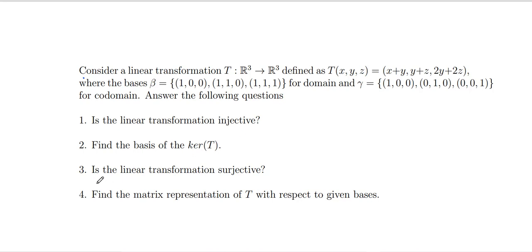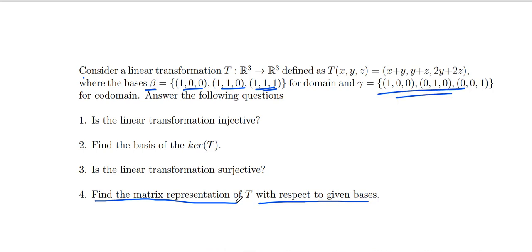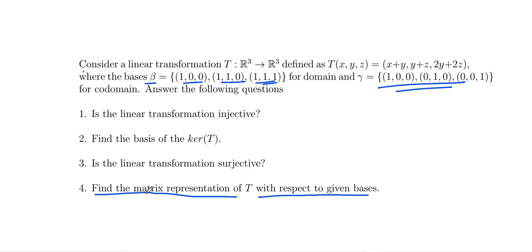Our next question is to find the matrix representation of T with respect to the given bases. The basis β for the domain is {(1,0,0), (1,1,0), (1,1,1)} and γ for the codomain is the standard ordered basis. To find the matrix representation, we need to find the image of each element of β and expand it along the basis γ of the codomain.